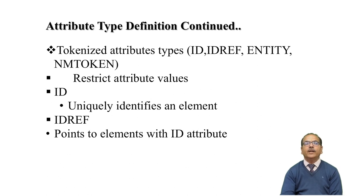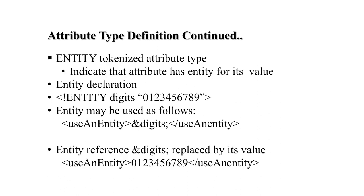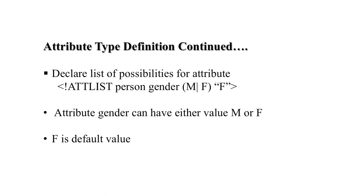The IDREF attribute only points to the ID attribute — this is an identification to the attribute. Then we have, for example, entity digit zero, meaning you are specifying values zero through nine, and the entity can be used as ampersand-digit, meaning only these digits are permissible. If we give an attribute like person gender with value M pipe F, there are two choices — male or female — and by default the value is F.